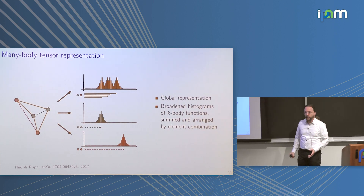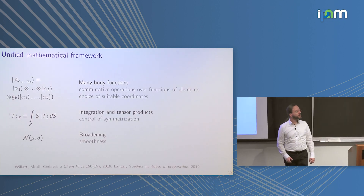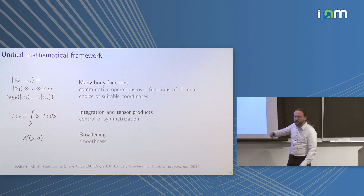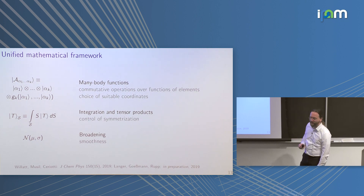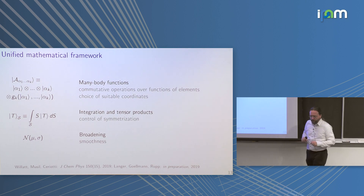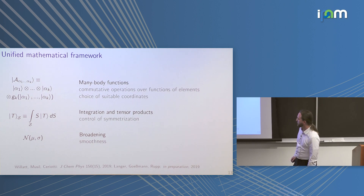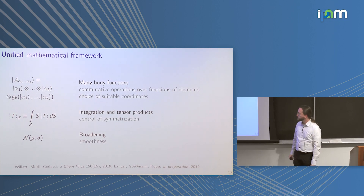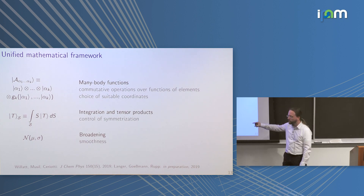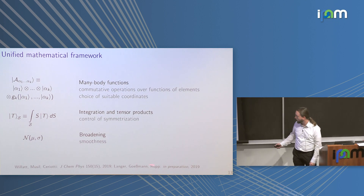These were three examples of the current state-of-the-art representations; there are maybe half a dozen truly good ones. Despite looking very different in the papers, there is a unified mathematical framework by Michele Ceriotti and co-workers, written in bracket notation, showing that all these representations arise from just a few concepts: defining a k-body function and deciding how to handle symmetries — whether to integrate them out or build them in. All these representations can be understood in terms of the same underlying concepts.